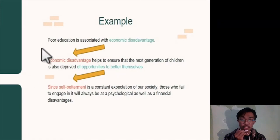We have three sentences here. The first sentence is poor education is associated with economic disadvantage. Economic disadvantage here is the first rheme that will become a second theme here. Economic disadvantage. And the second rheme here of opportunities to better themselves will become the third theme here since self-betterment. So this is something like related idea. I think that's all the simple linear progression. The next material will be explained by my partner. That's all from me. Thank you.